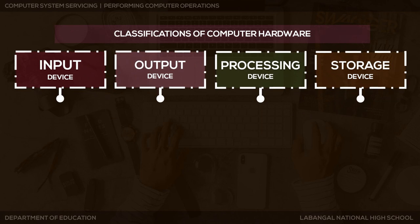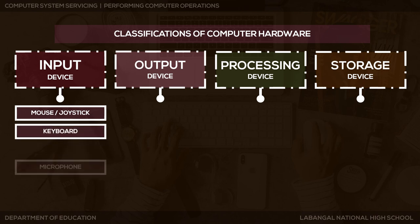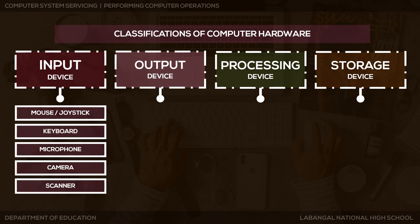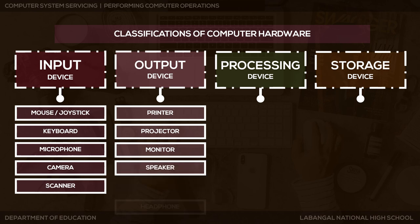Input device is a piece of computer hardware used to provide data to a computer for interaction and control — it allows input of raw data for processing. Examples include mouse, joystick, keyboard, microphone, camera, and scanner. Output device is any piece of computer hardware equipment which converts information into human-readable formats. Under that, we have printer, projector, monitor, speaker, and headphone.